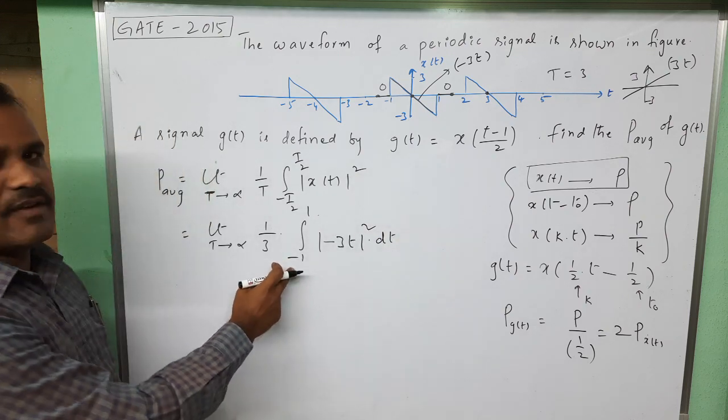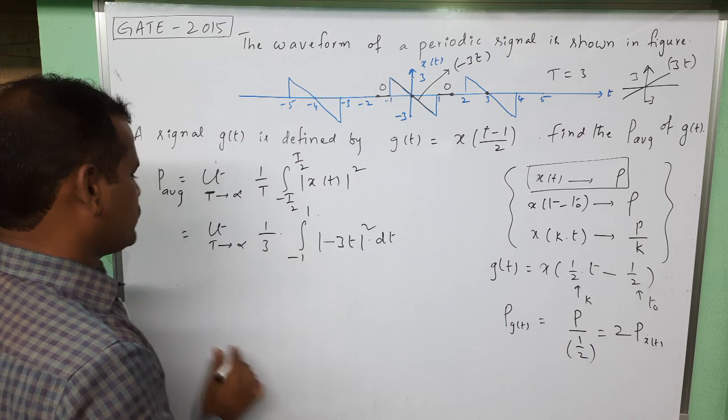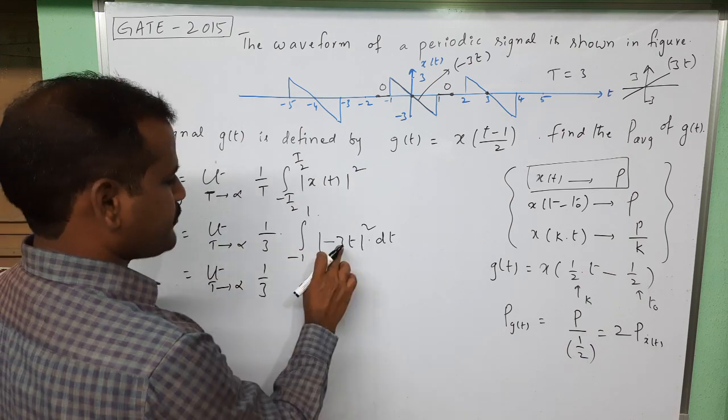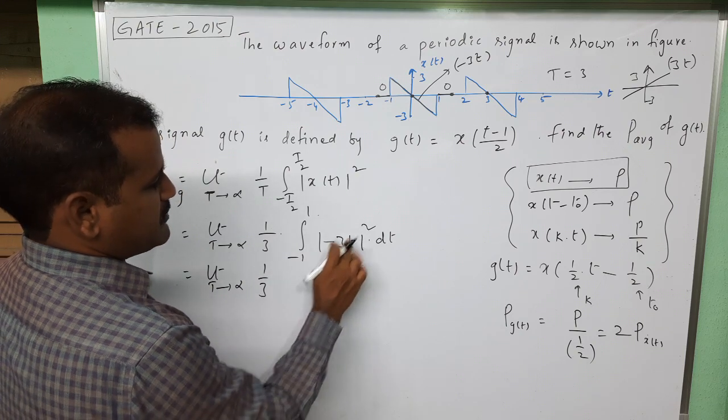So this is the power of the given signal x(t). We need to simplify this one. Let us take it: limit T tending to infinity, 1/3, and (-3)² is 9.